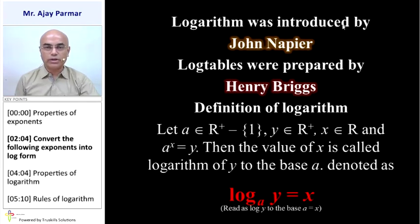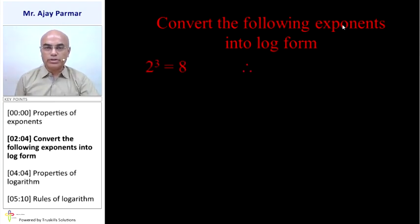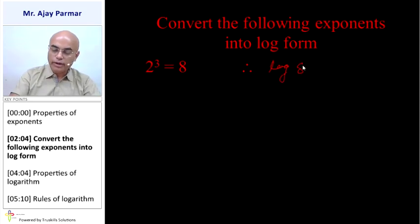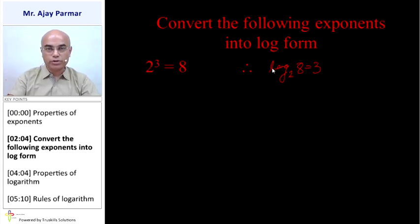Let us convert some exponential forms into logarithmic form. For 2 raised to 3 equals 8: here 2 is the base, 3 is the power, and 8 is the answer. Converting to logarithmic form, it becomes log 8 to the base 2 equals 3. The base remains as the base and the power becomes the answer of the log.